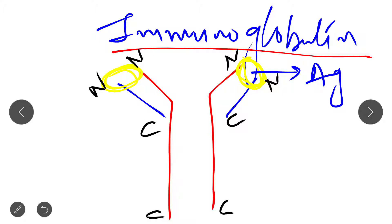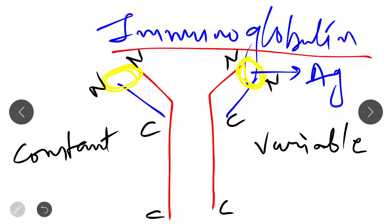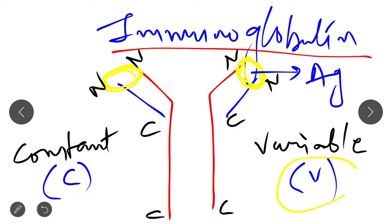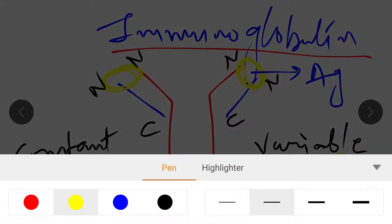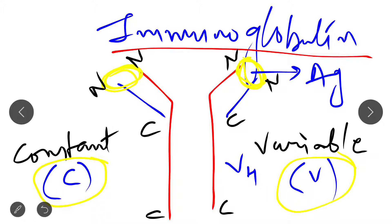In the immunoglobulin structure there are basically two types of regions present: one is the variable region and one is the constant region. Variable region is denoted by V and constant region is denoted by C. Variable region of heavy chain is denoted as VH, variable region of light chain as VL, constant region of heavy chain as CH, and constant region of light chain as CL.